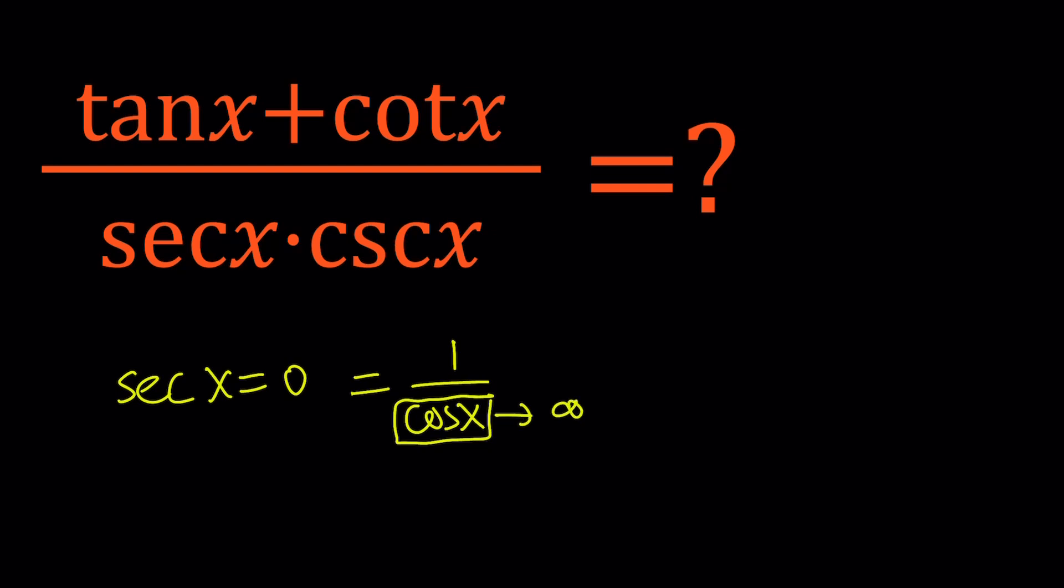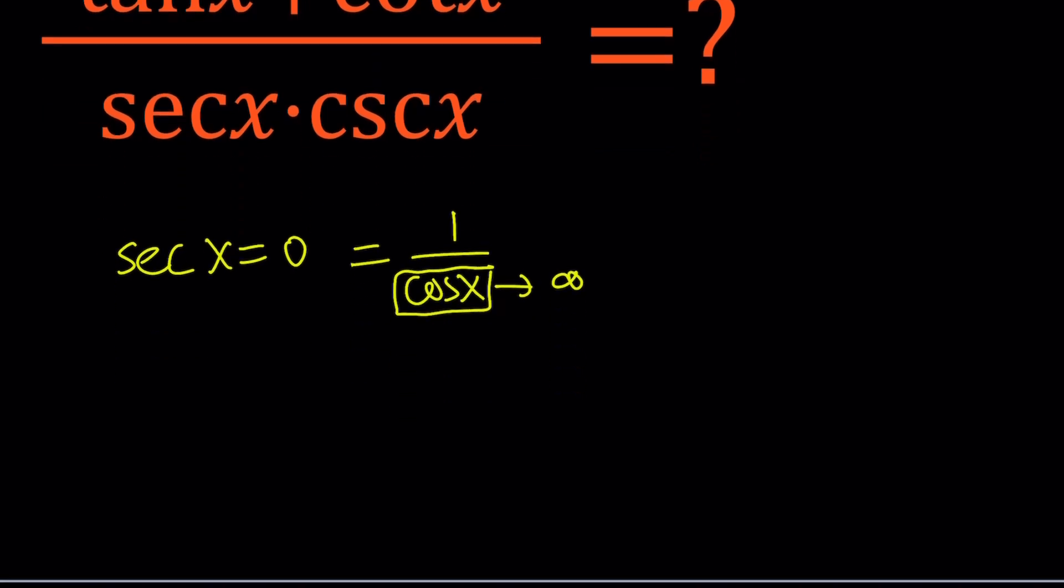So if cosine x approaches infinity, then 1 over infinity is going to approach 0. But cosine is always between negative 1 and 1, so that's not going to happen. We can also look at it from another angle.